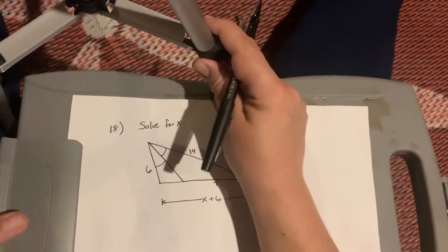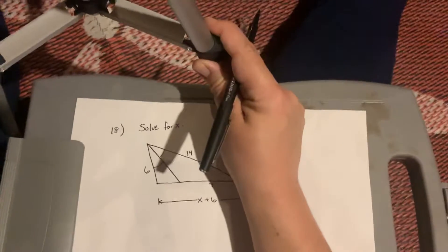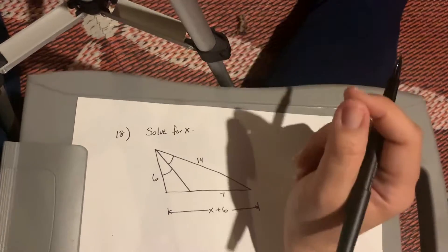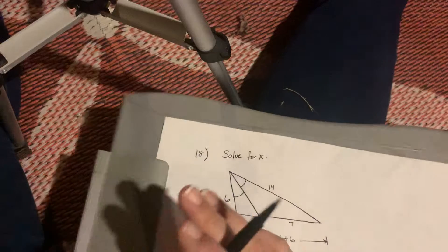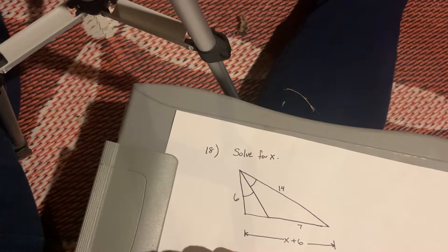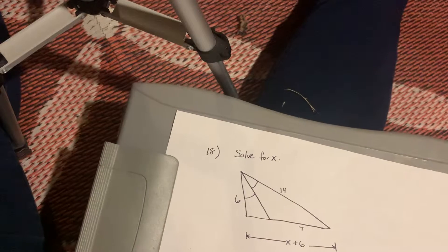So in your similarity section in your notebook, you will see one of your pages, probably one of the last ones we did is about angle bisector theorem. So what that basically tells us, let me get some colors here, is that our triangle is split into proportions.